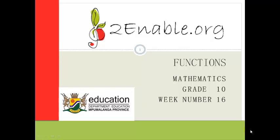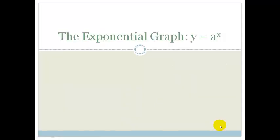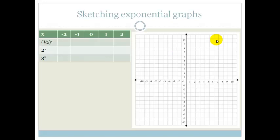Good day, Grade Tens. Today we're going to continue with our lesson on functions and we're going to be looking at the exponential graph. The exponential graph has a standard form, which is y equals a to the x, where a is a number. We're going to do exactly what we did before in the previous videos on functions — plotting different points and looking at what different numbers do to this graph and the shape of the graph.